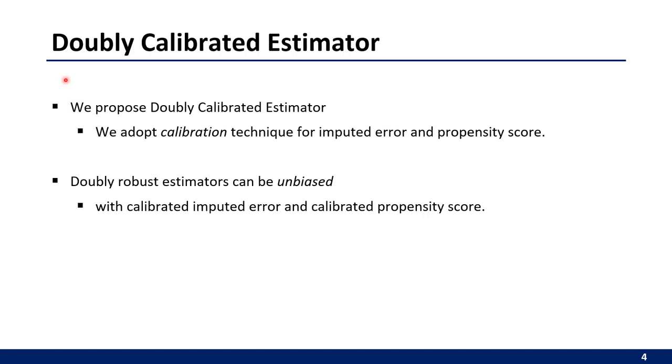So, we propose the Doubly Calibrated Estimator and adopt calibration techniques for the imputed error and the propensity score. Doubly Robust Estimators can be unbiased with our calibrated imputed errors and calibrated propensity scores.